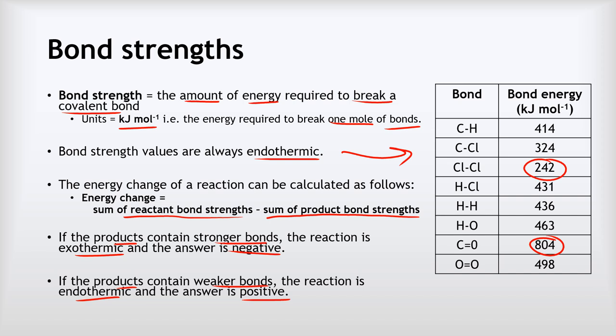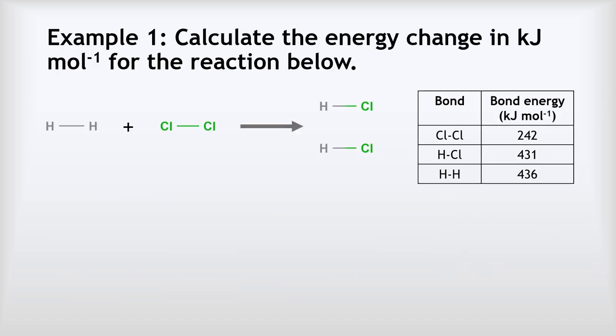We're going to look at a few worked examples. Worked example number one: calculate the energy change in kilojoules per mole for the reaction below. You'll be given full displayed formulas showing all the bonds for your reactants and products, and a table giving the bond energies for each of those bonds. You will never need to memorize bond energies — you'll always be given the data you need in the question.